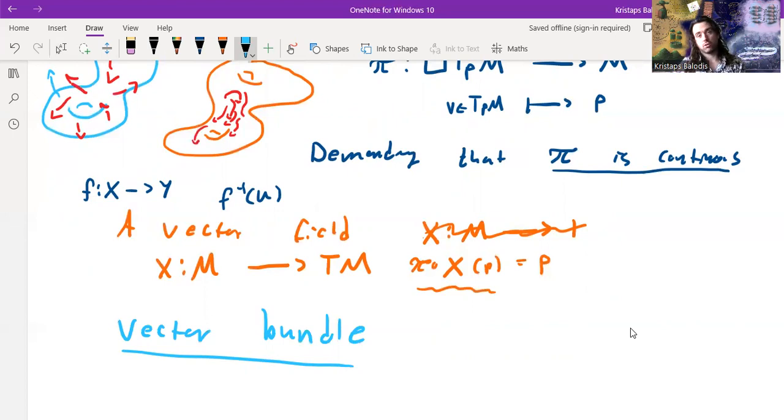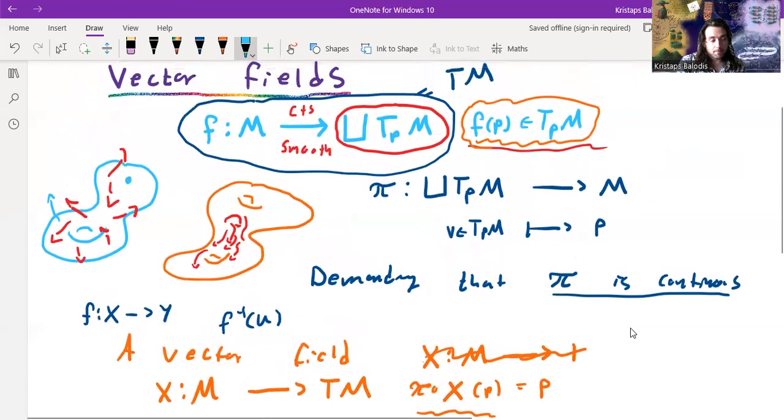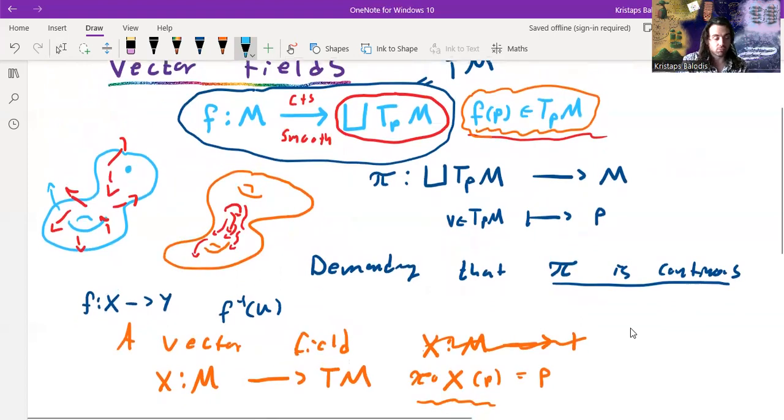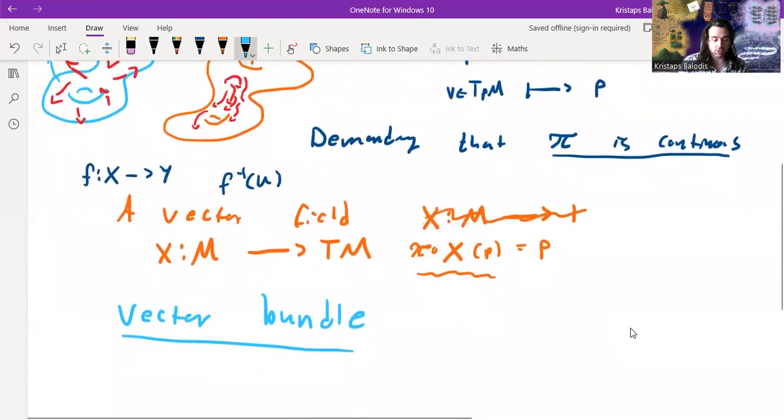So these come up in all sorts of ways in abstract mathematics and physics. And we can see right here a good reason why we would want such a thing. So by a vector bundle, I just mean, we have some sort of abstract shape, some sort of abstract surface.